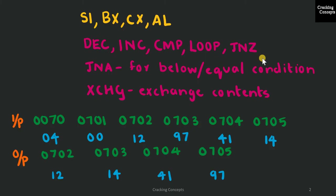JNZ will perform a jump when the zero flag is not set. Another instruction I'll be using is JNA. This will perform a jump if, during comparison of AL and the location pointed by SI, the value of AL is lesser than the value pointed by SI — meaning there is no need for swapping. In that case we'll jump to another location, done by JNA.